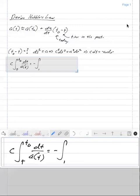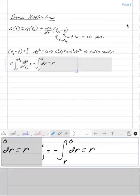This equals minus the integral, photon starts at R comes to us at zero dr. And this equals r.